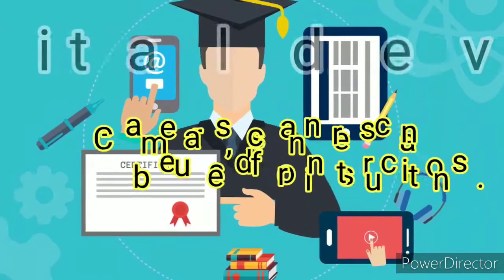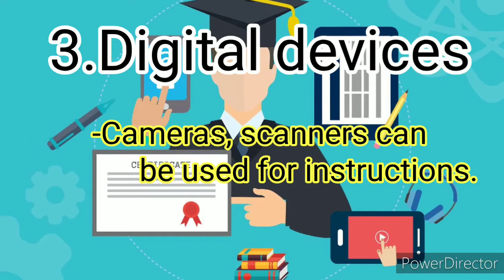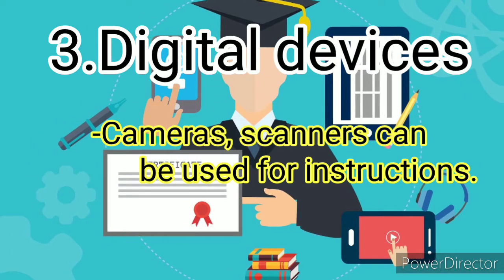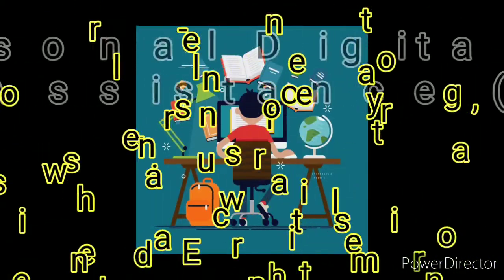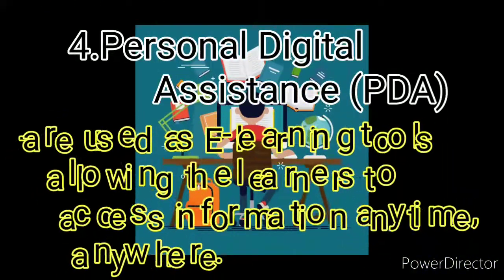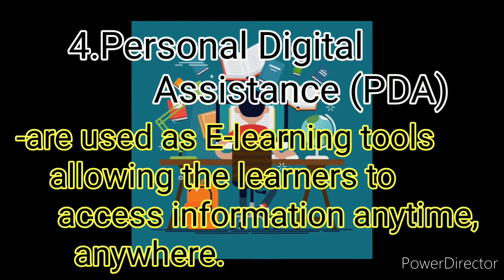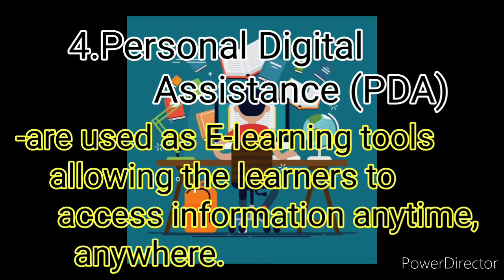The third one is digital devices. Digital devices like cameras and scanners can be used for instruction. The fourth is personal digital assistance, or PDA. PDA wireless devices are used as e-learner tools, allowing learners to access information anytime, anywhere.